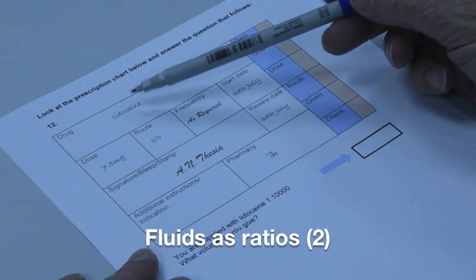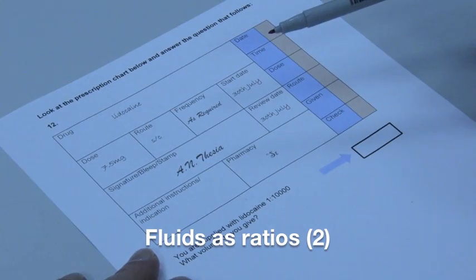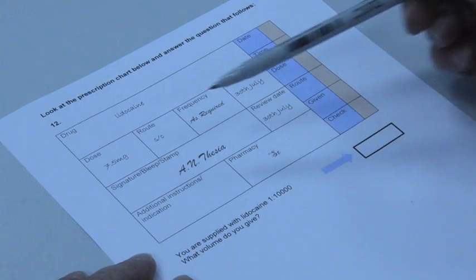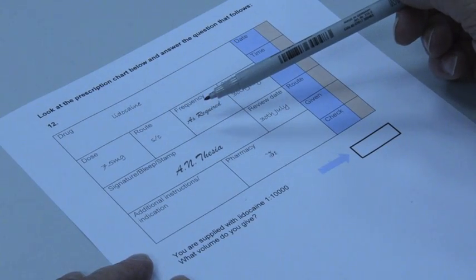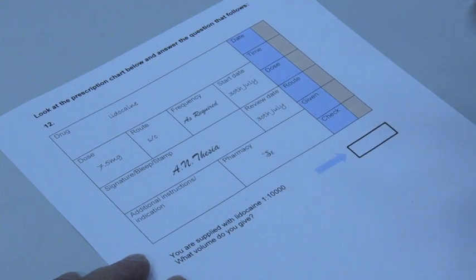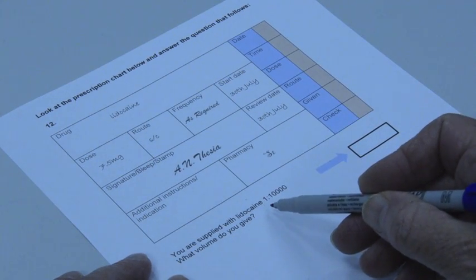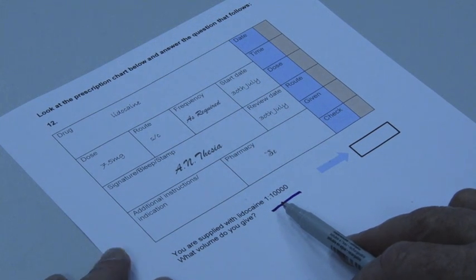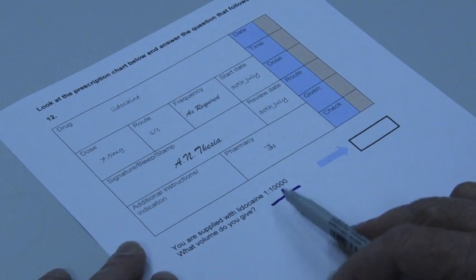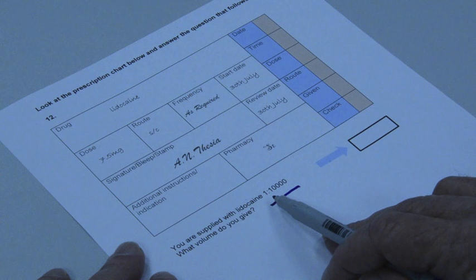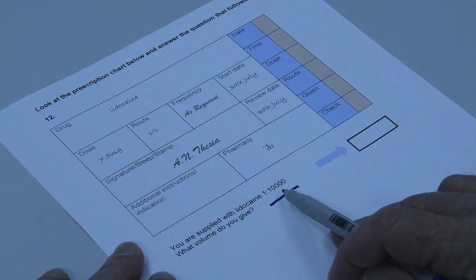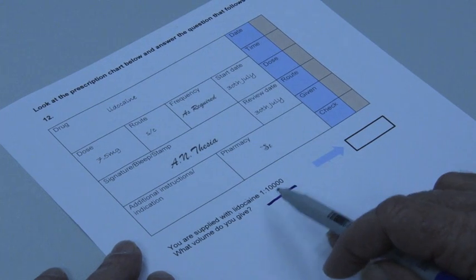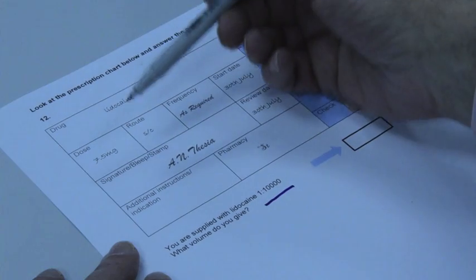Alright, number 12 of our healthcare calculations. I would say have a look at 11 before you do number 12 because that gives a little bit more explanation about ratios. This is quite a big one, one to ten thousand, but all that means is that you have a solution which has one gram in it to ten thousand mils of whatever that solution is.